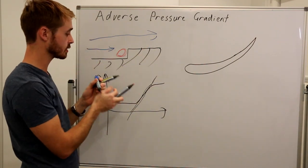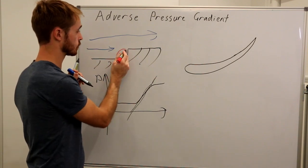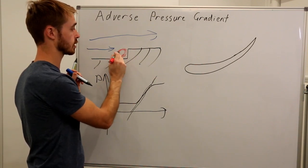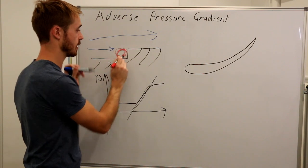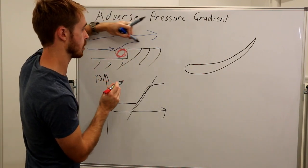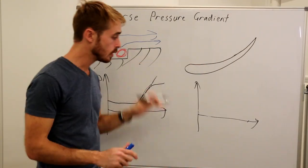What this means is we get a flow structure that involves a flow separation and recirculation region, technically speaking going that way in front of our step, and then our flow comes up along and around here.